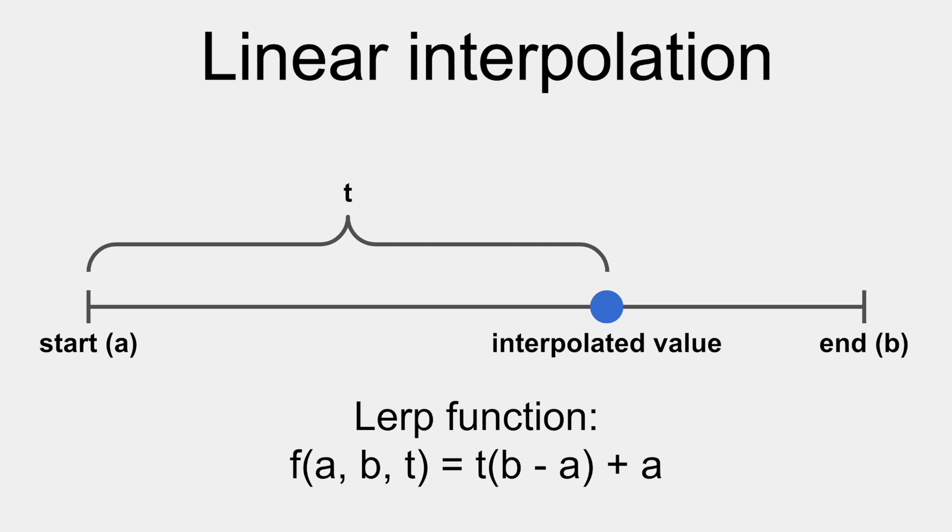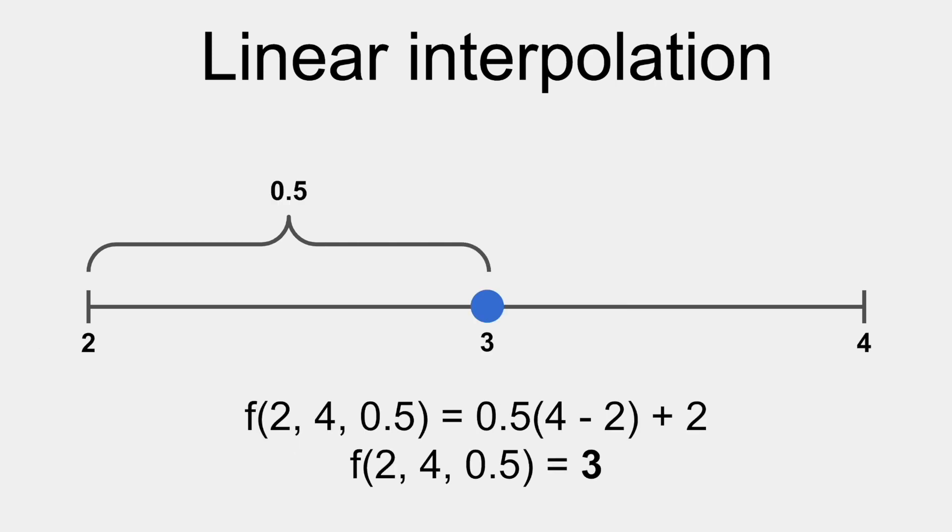Given a start value and an end value to interpolate, we can find the value at any fraction between them. This fraction is usually represented by a variable called t. For example, interpolating between 2 and 4 with a t value of 0.5 would be 3, because 3 is 0.5 of the way between 2 and 4.